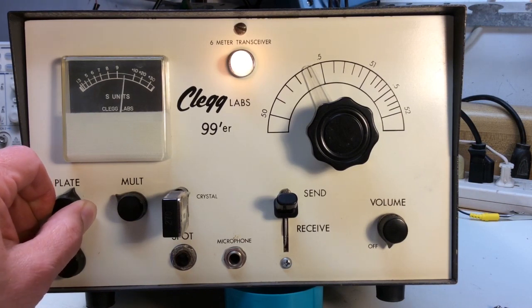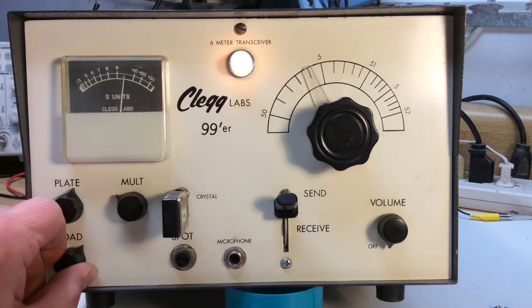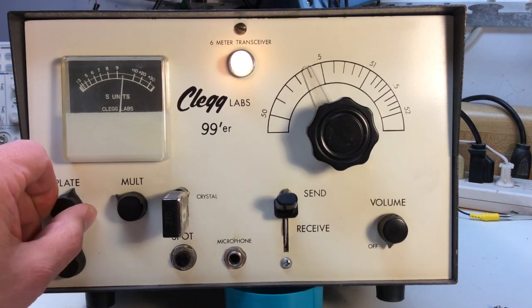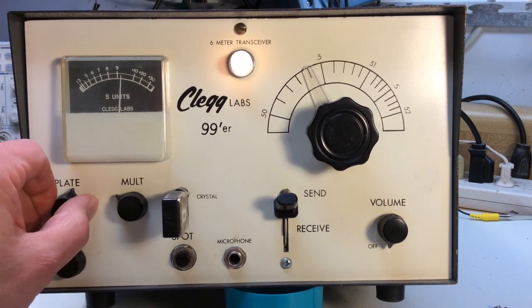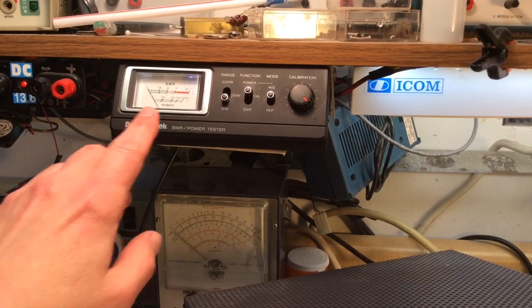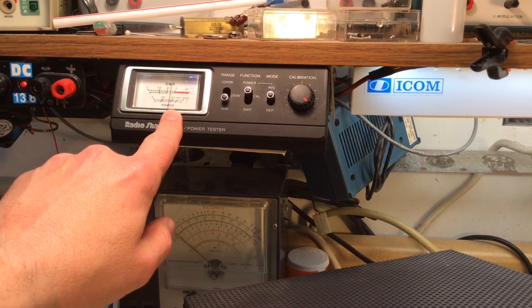The manual does say if I have an indication of half scale or more that I am probably transmitting 5 watts or so output at the antenna connector. So according to the meter on the radio, it is working just like it's supposed to. I'm getting full power output. And I can verify the power output on an external meter.